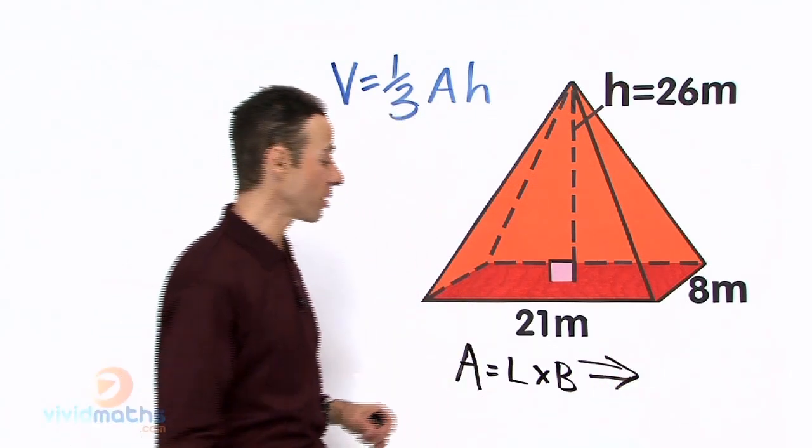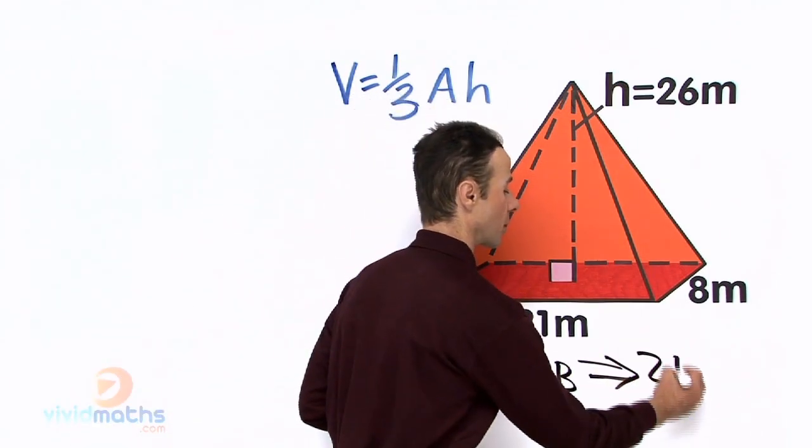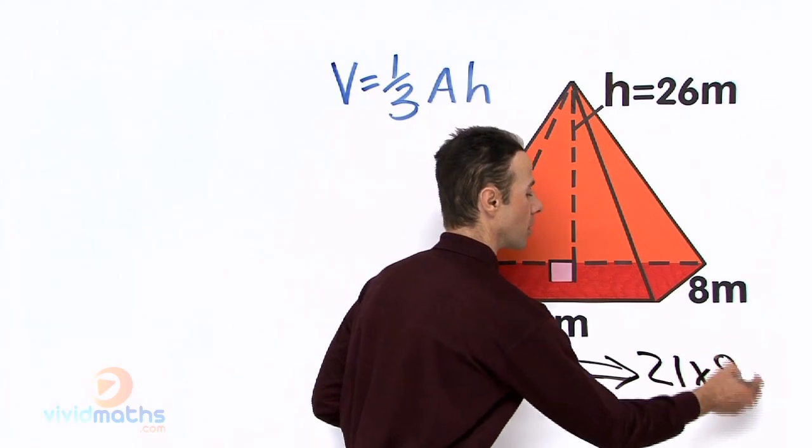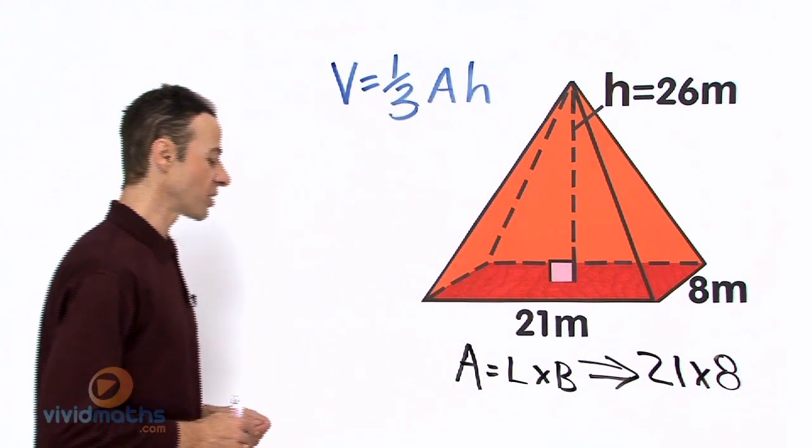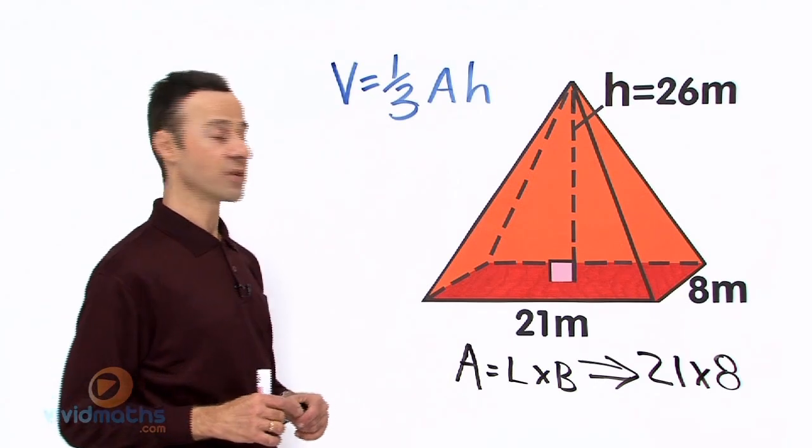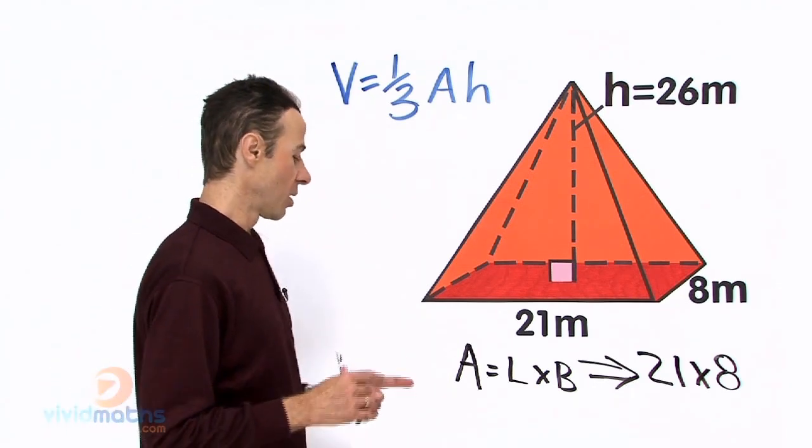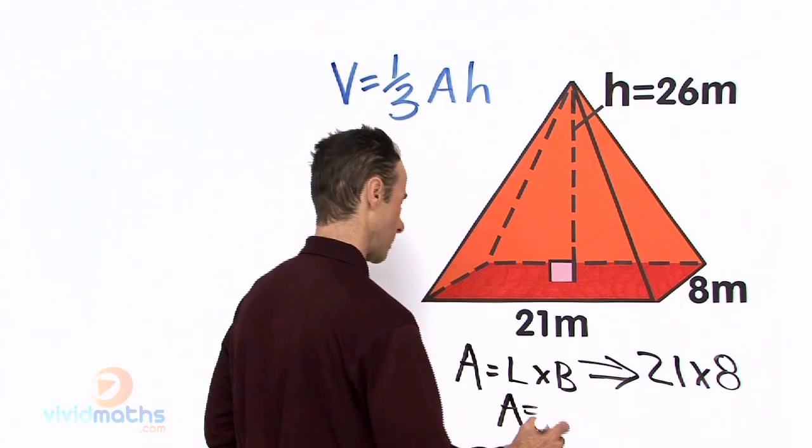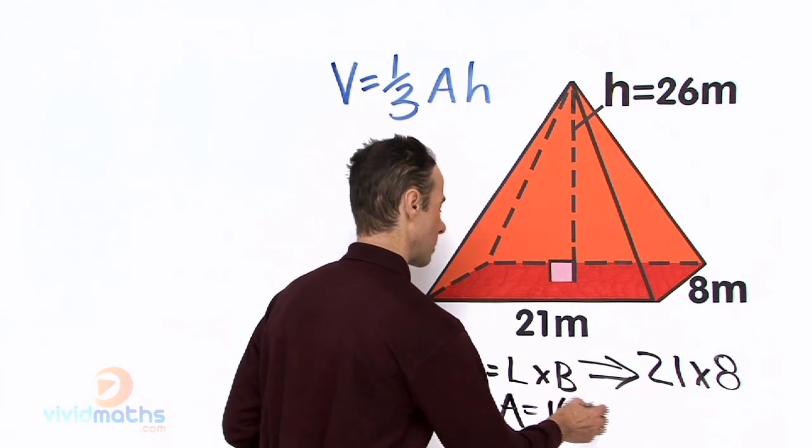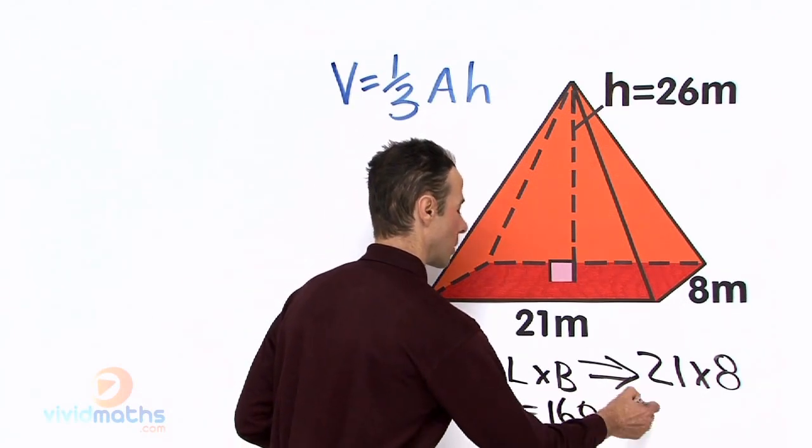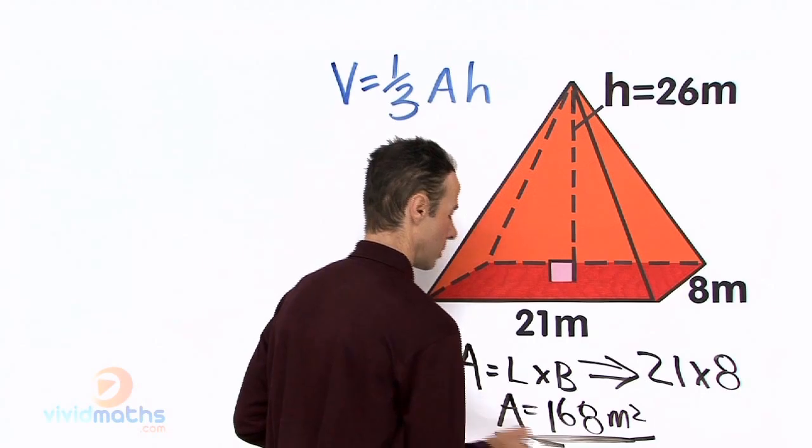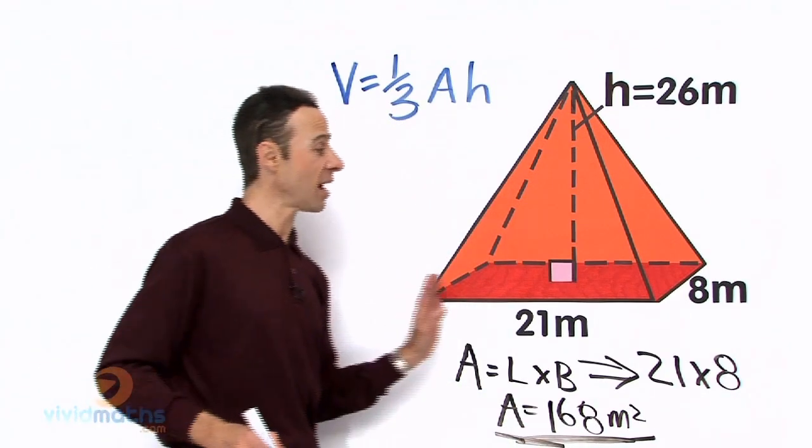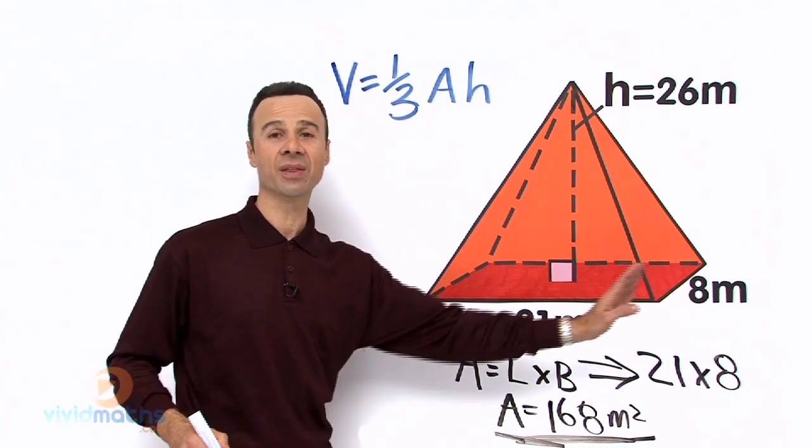So it's length times breadth, which is 21 times 8. So we can go 21 times 8 and that's going to give us a grand total of 168 meters squared. That dark red area down here, that's the base right there.